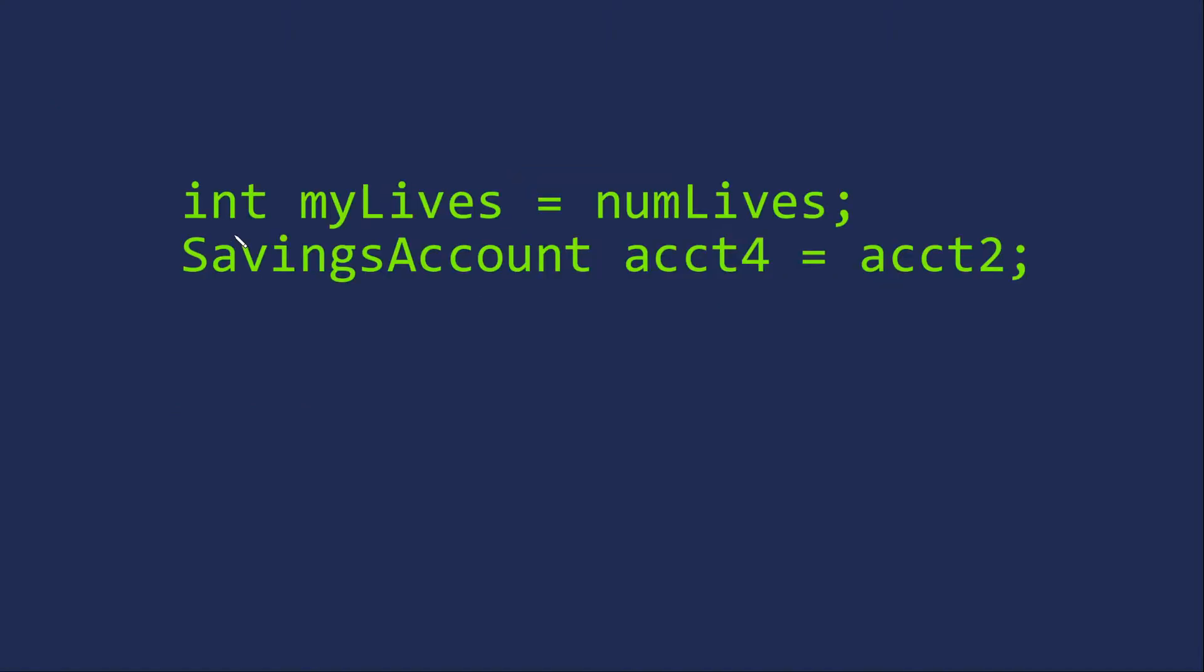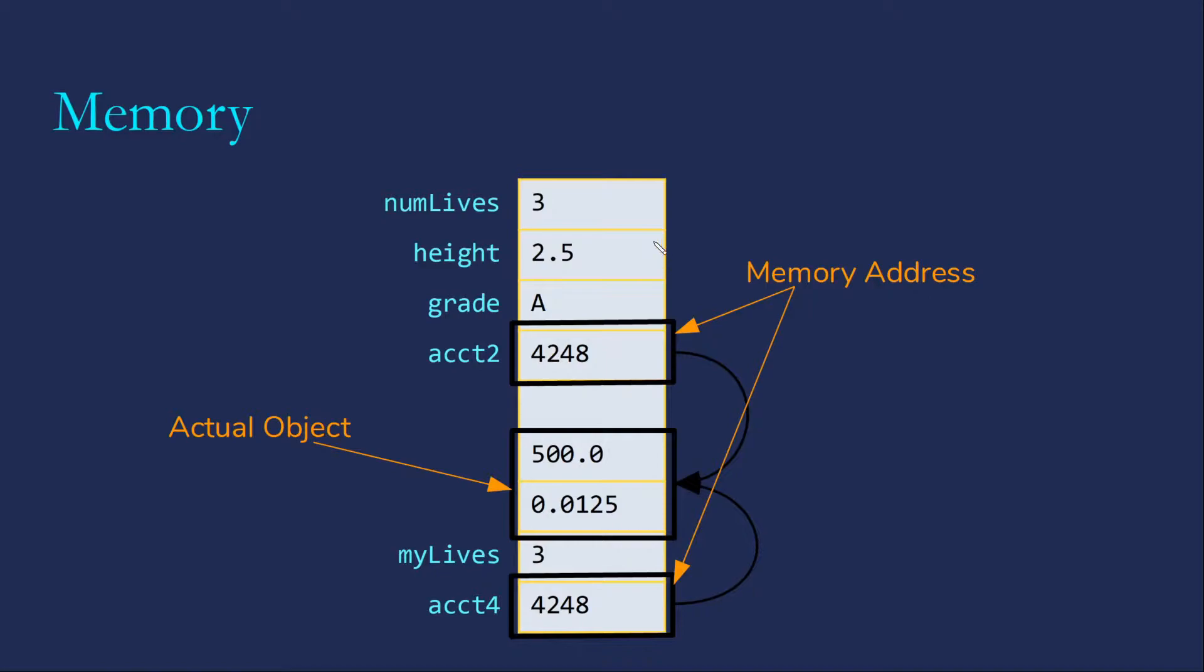Assume we then create two new variables: an int myLives that I'm going to assign to numLives, and a savings account account4 that I'm going to assign account2. If we look back at our image of memory, myLives has a copy of the three from numLives, but account4 has a copy of the address from account2.